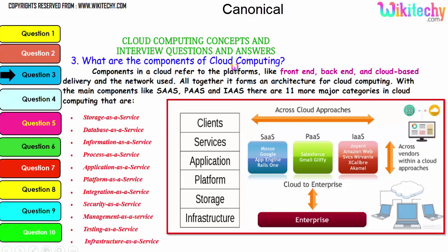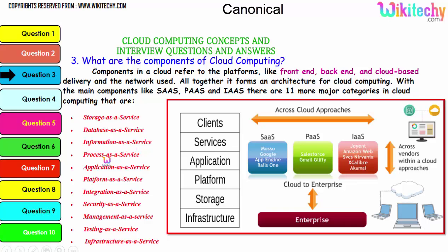The components of cloud computing refer to platforms like front-end, back-end, cloud-based delivery, and the network used. Together they form the architecture for cloud computing, with the main components being Software as a Service, Platform as a Service, and Infrastructure as a Service. There are 11 major categories in cloud: storage, database, information, process, application, platform, integration, security, management, testing, and infrastructure as a service.